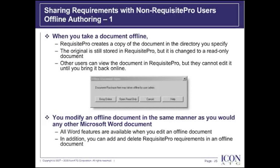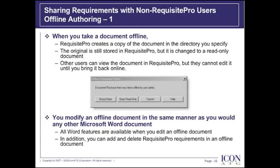Before taking a document offline, make sure all changes made to the requirement text outside the document — such as in the attribute matrix or Requisite Web — have been saved in the document. And lastly, do not rename documents while they're offline. The original file name is necessary so the offline document is recognized within Requisite Pro.